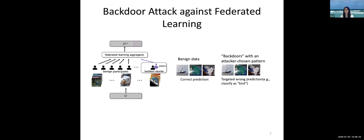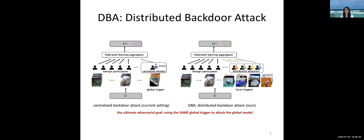The next question we want to ask is: can we make it even more stealthy for attackers? For example, instead of injecting the whole pattern as a backdoor — which is easy to identify by humans if they have time to look at each training point — attackers may have better strategies.